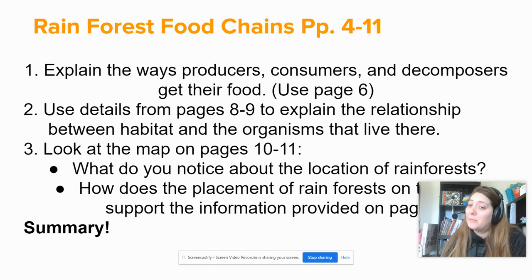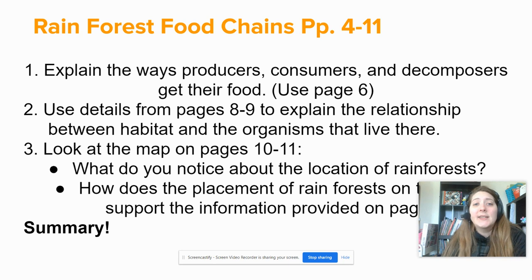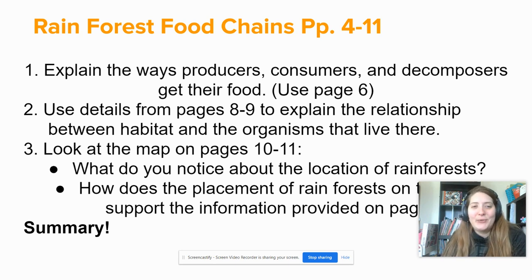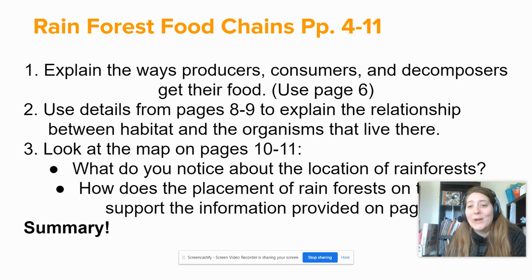So when we read pages four through 11, you're going to answer number one: explain the ways producers, consumers, and decomposers get their food. Use page six as a hint. Number two: use details from page eight through nine to explain the relationship between habitat and the organisms that live there.